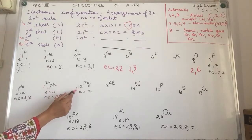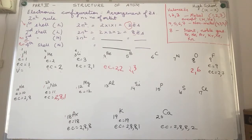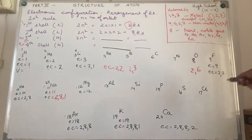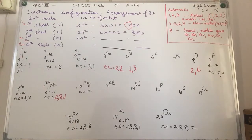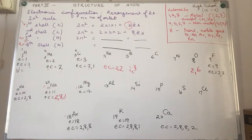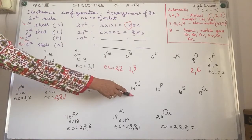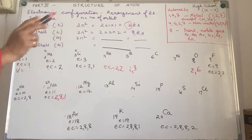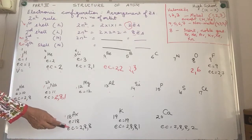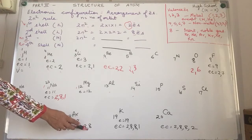Now try writing the electronic configuration of magnesium, aluminium, silicon, phosphorus, sulfur, and chlorine — it's in your best interest to try while we go through the topic, as it helps embed the concepts. The answers: magnesium is 2, 8, 2; aluminium is 2, 8, 3; I'll leave phosphorus, sulfur, and chlorine for you. Argon is 2, 8, 8 — that's 2 + 8 + 8 = 18.